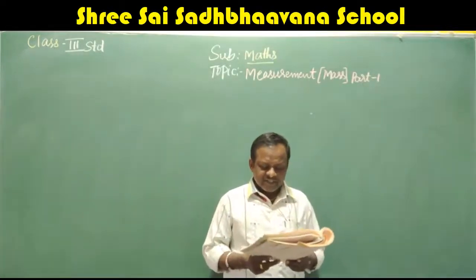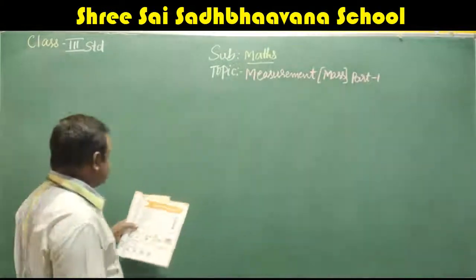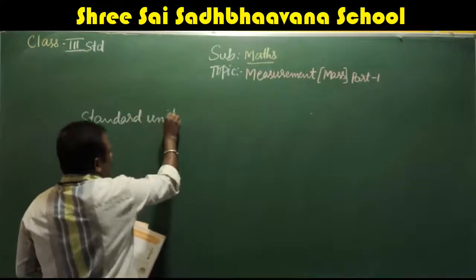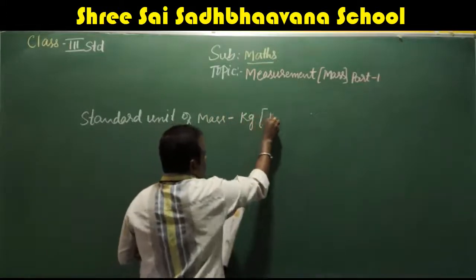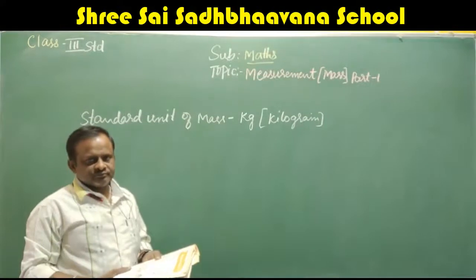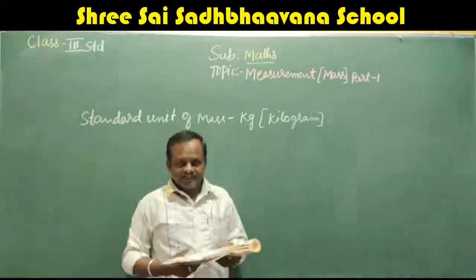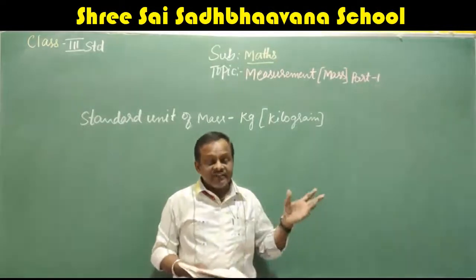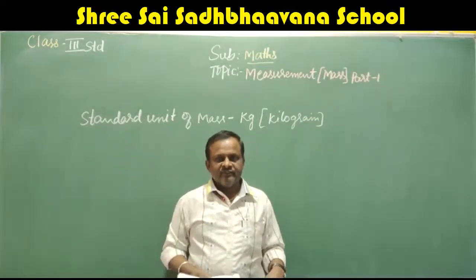We use kilograms (kg) to weigh heavier objects and grams to weigh lighter objects. The standard unit for measuring mass is kilogram, or kg. For very small or lighter objects we use grams.